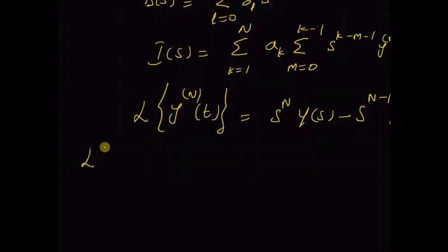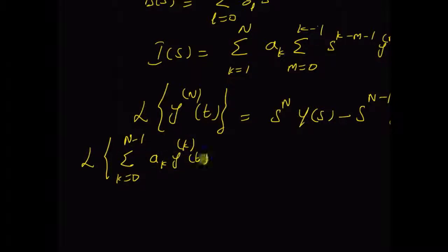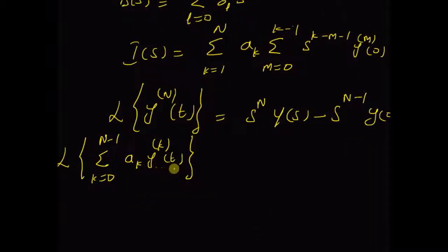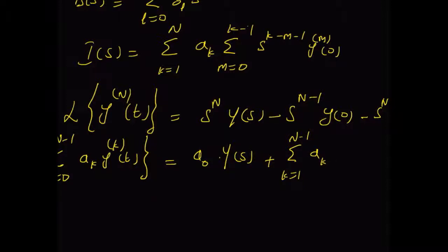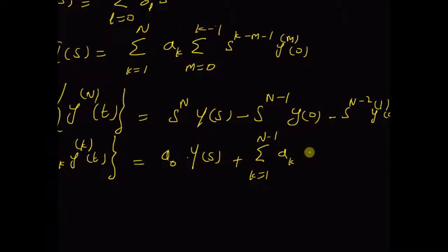Next we have the Laplace transform of the weighted sum: summation k equal to 0 to n minus 1, a_k and the kth derivative of y(t). Note that for k equal to 0, this is not a derivative — it is actually the function itself. So for the first term, that is a_0, we only have Y(s). And for the second term onwards, that is from k equal to 1 to n minus 1, we have a_k multiplied by the Laplace transform of the kth derivative.